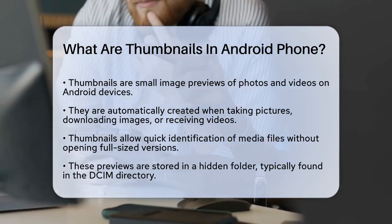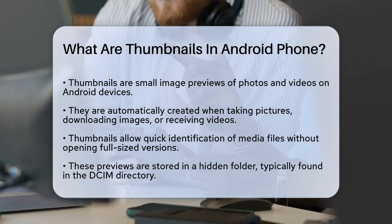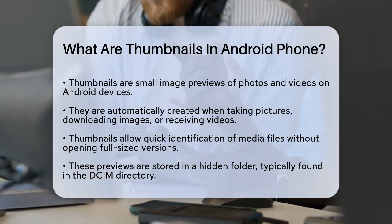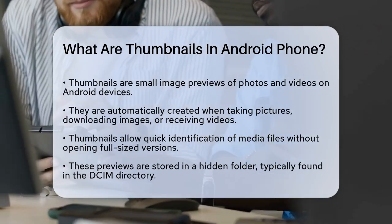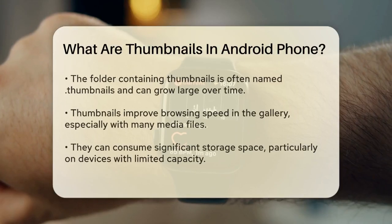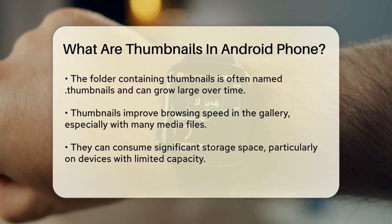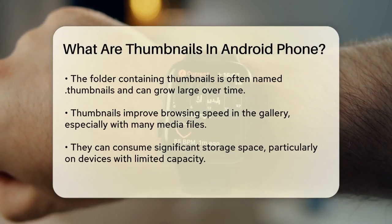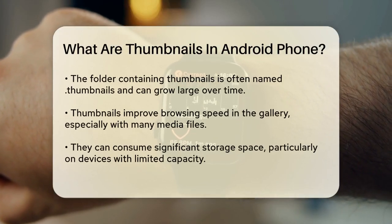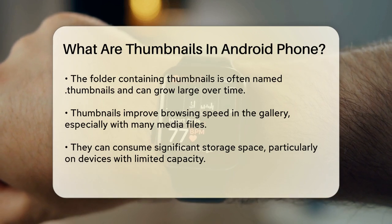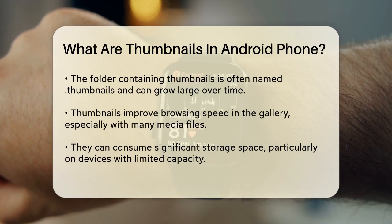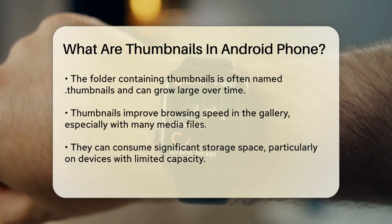Thumbnails are stored in a hidden folder on your device, usually in the DCIM directory. You might find a folder named .thumbnails inside the DCIM or pictures folder. This folder can grow quite large over time, especially if you have a lot of photos and videos on your phone.